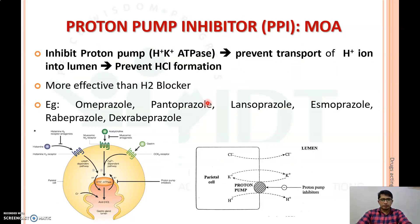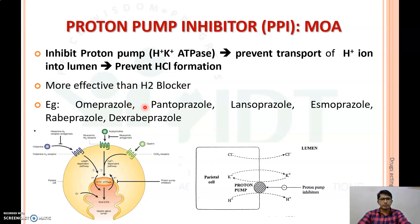What is the mechanism of action of proton pump inhibitors? In one word, they will inhibit the proton pump — that is the H+/K+ ATPase — which is present in the parietal cell and used for the transport of H+ ions to the gastric lumen. Thereby it will prevent HCl formation. PPIs are more effective than H2 blockers. Examples include omeprazole, pantoprazole, lansoprazole, and esomeprazole.